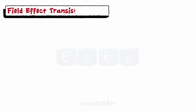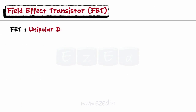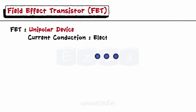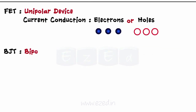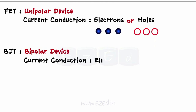Field effect transistors, abbreviated as FET, is a unipolar device, meaning that current conduction takes place only due to one type of carrier. This is the major difference between the BJT and the FET, as in the BJT, conduction of current takes place due to both electrons and holes.